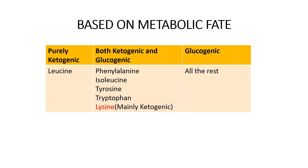Based on metabolic fate, amino acids can be ketogenic, glucogenic, or both ketogenic and glucogenic. Leucine is the only purely ketogenic amino acid — it is a branched chain amino acid. Those amino acids which are both ketogenic and glucogenic are phenylalanine, isoleucine, tyrosine, and tryptophan. Lysine, seen by many authors as ketogenic, is actually both ketogenic and glucogenic. All remaining amino acids are glucogenic.